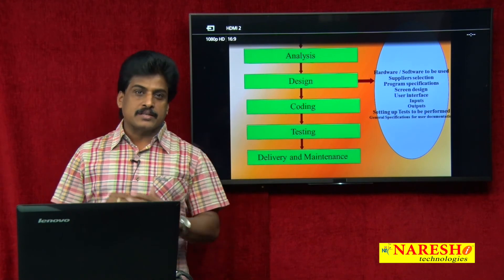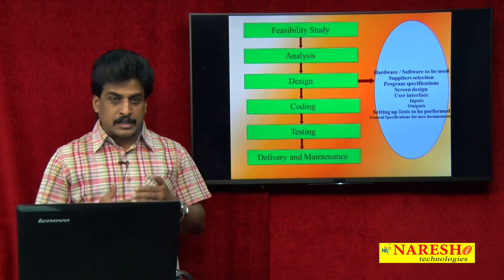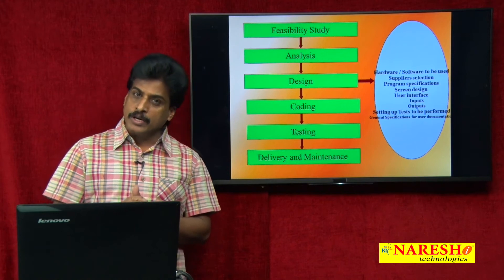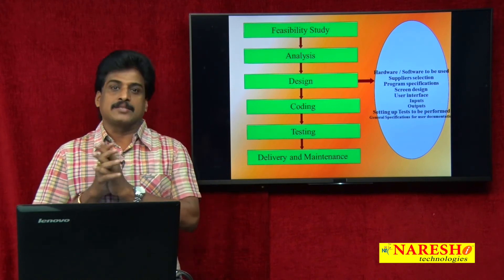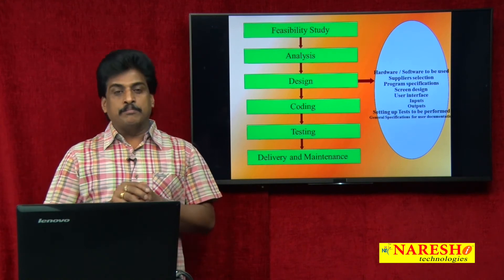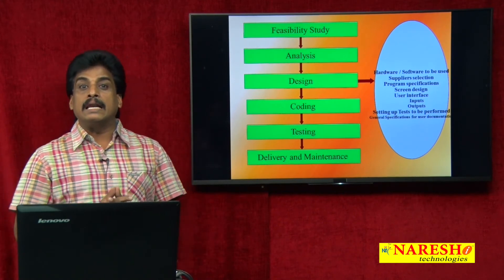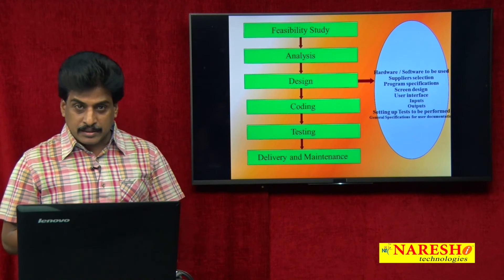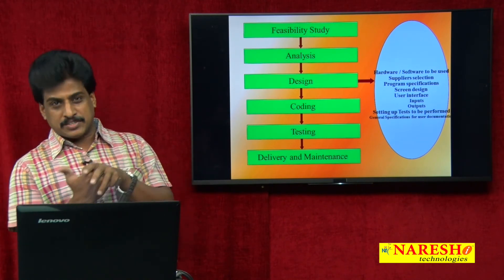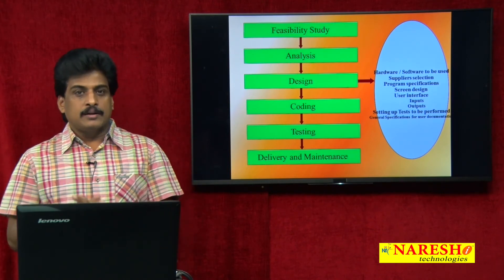Once coding is successfully completed without error and the source code is executed through many cycles of unit testing — also called component testing — the module is generated. Once module testing is completed, it is converted into a build (B-U-I-L-D). The build is the output of the coding module and is the input to the testing phase. The released build goes to the testing team.